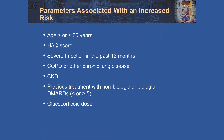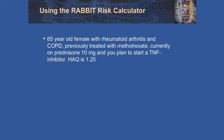The parameters included in the tool are: age greater or less than 60, HAQ score, whether the patient had a serious infection in the preceding 12 months, COPD or other chronic lung disease, chronic kidney disease, whether they've previously been on fewer or greater than or equal to 5 biologics or DMARDs, and their glucocorticoid dose. For example, a 65-year-old female with rheumatoid arthritis and COPD, previously on methotrexate, on prednisone 10 milligrams, and you want to start a TNF inhibitor — her HAQ score is 1.25. You go to the website and plug in all this information, then select TNF inhibitor.